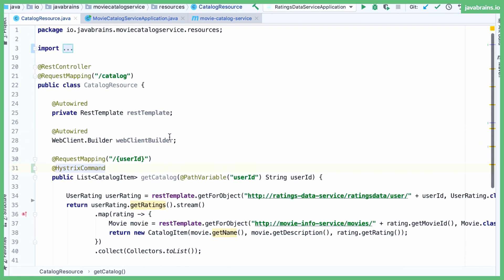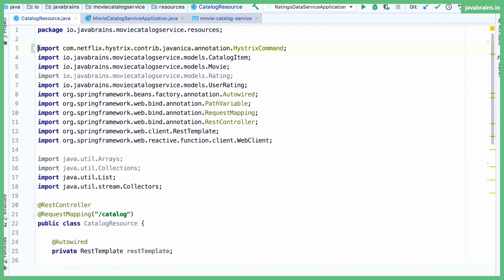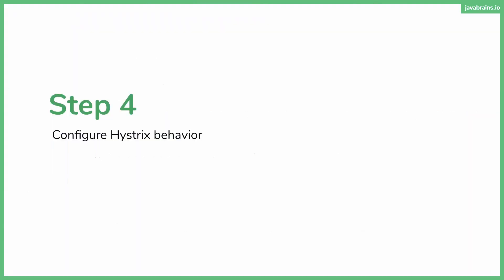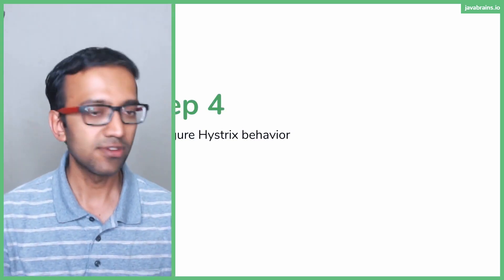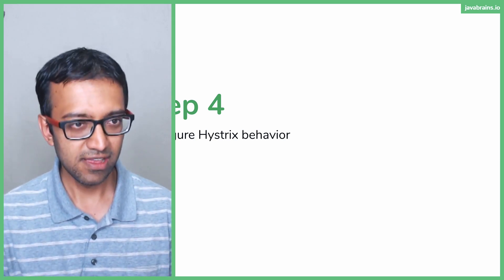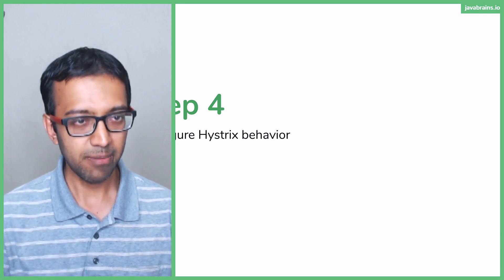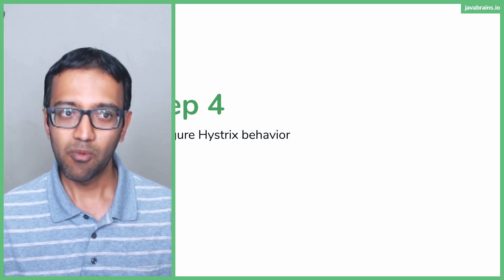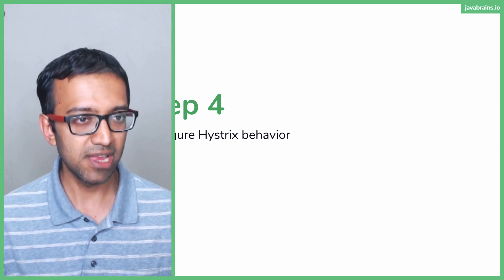So now I'm telling Hystrix: mark this as something that needs to break — this is a method which should not cause the whole thing to go down. I want this to break the circuit when something goes down. That's step four: configuring Hystrix behavior. There are a bunch of things we can do, but the first thing I'm going to approach is to leave everything as the default and look at just the fallback mechanism. What happens when a circuit breaks?